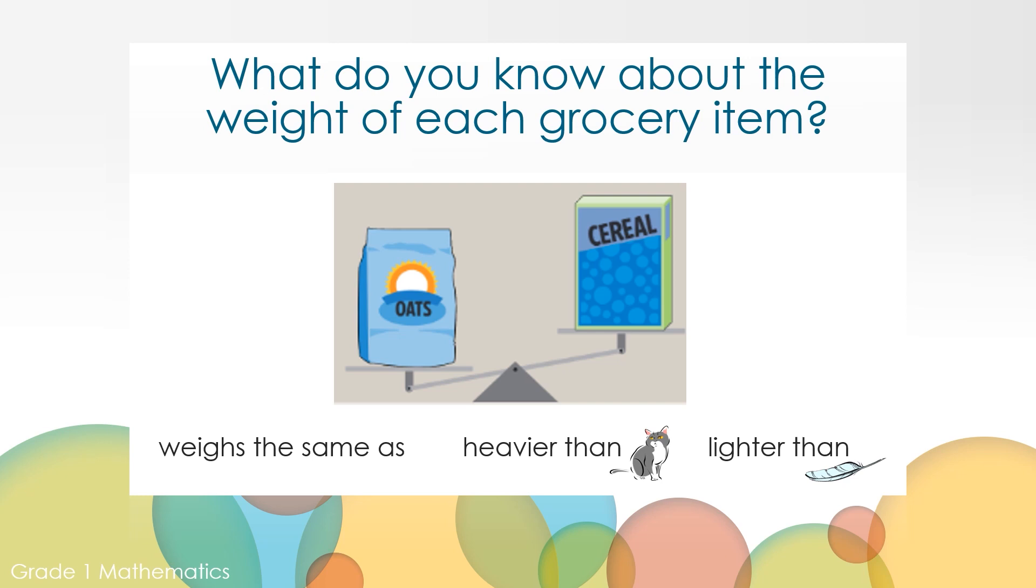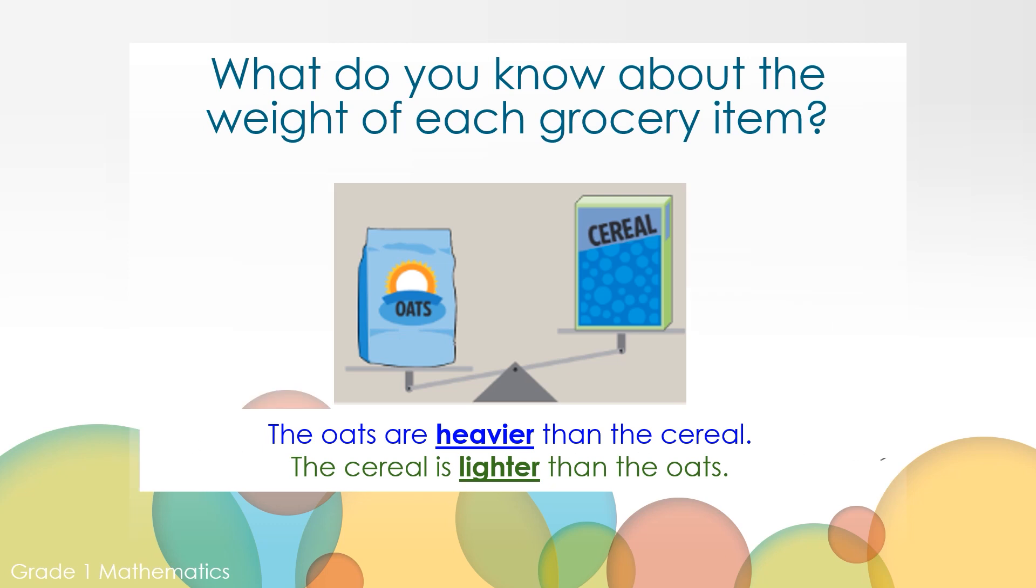If you need some help, you can use the word bank on the bottom of the screen to support you and your thinking. The words are weighs the same as, heavier than, remember the cat? Lighter than, like the feather. Maybe you noticed that the oats were down lower than the cereal. The oats are heavier than the cereal. Or maybe you saw the cereal up higher than the oats and you wrote, the cereal is lighter than the oats.